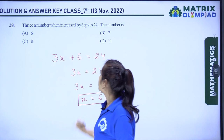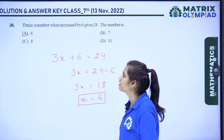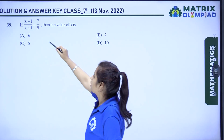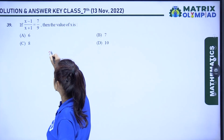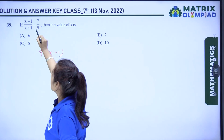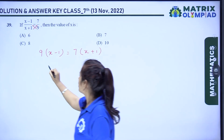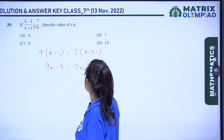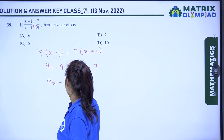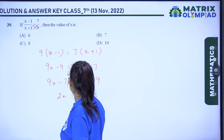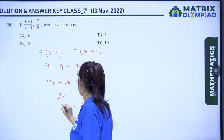Question 39: (x − 1)/(x + 1) = 7/9. Cross multiplying: 9(x − 1) = 7(x + 1), so 9x − 9 = 7x + 7. Rearranging: 2x = 16, giving x = 8. Option C is the correct answer.